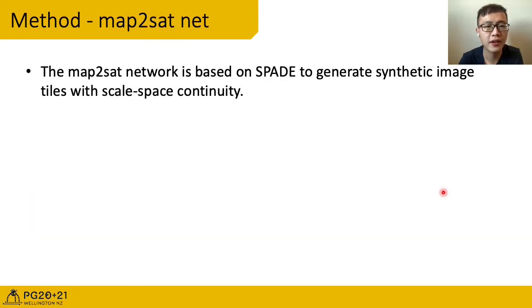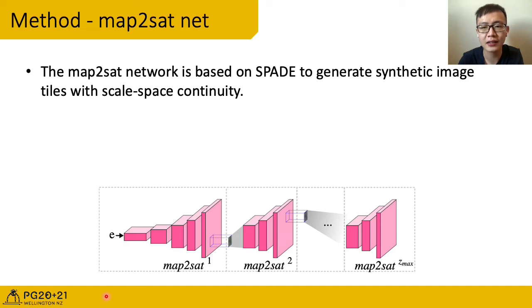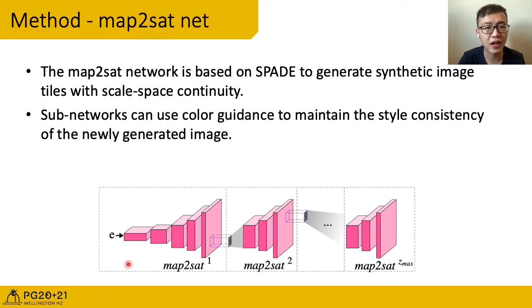The map2sat network is based on SPADE to generate synthetic image tiles with scale space continuity. The map2sat uses multiple subnetworks to generate tiles at different scales, retaining a fixed resolution of 256 by 256 at each scale level. The input to map2sat at each scale is a map label image and an optional 3-channel color guidance image which is only applied when the scale level Z is larger than 1. In order to reduce memory and data requirements, we crop each subnetwork's input along with its architecture. With this cropped architecture, we were able to train the whole network end-to-end when required.